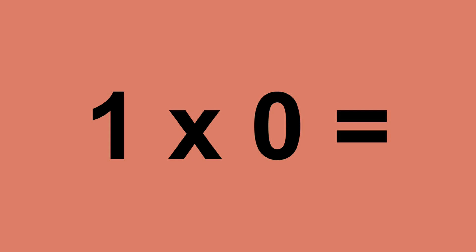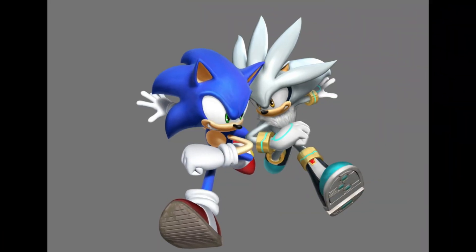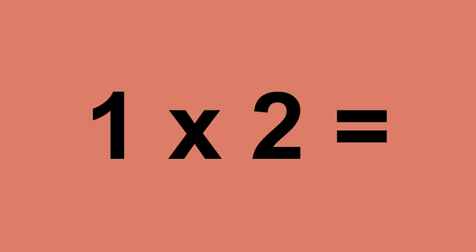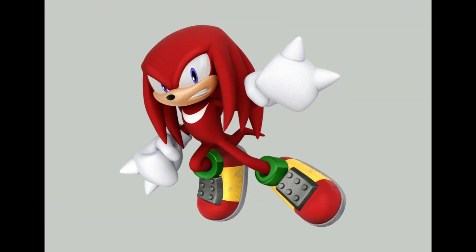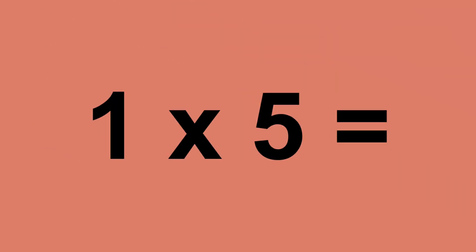One times zero equals zero. One times one equals one. One times two equals two. One times three equals three. One times four equals four. One times five equals five.